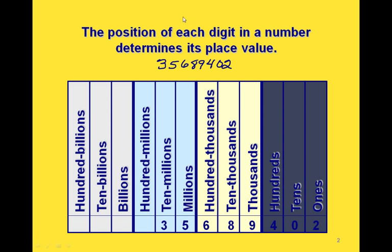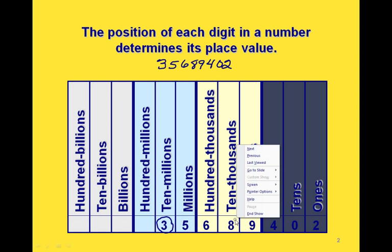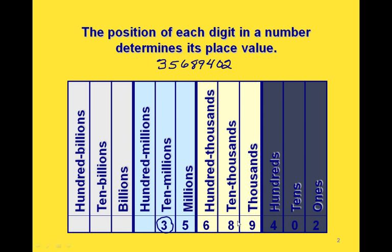Those digits are listed down here. So the first digit, the 3, has a place value of 10 million. The fourth digit, the 8, has a place value of 10,000. And the sixth digit, the 4, has a value in the hundreds.